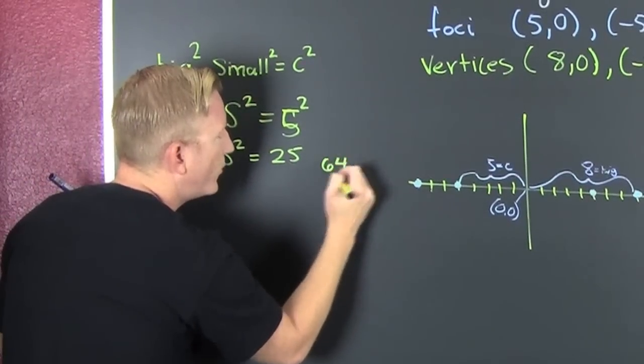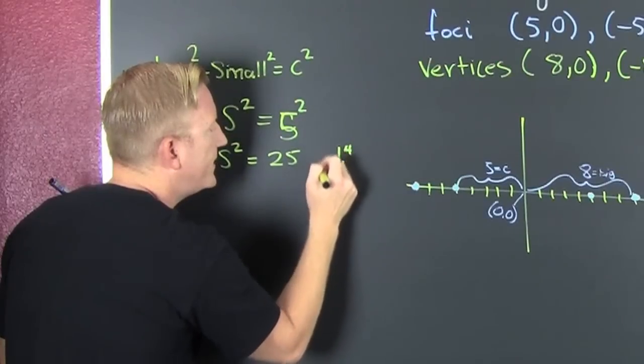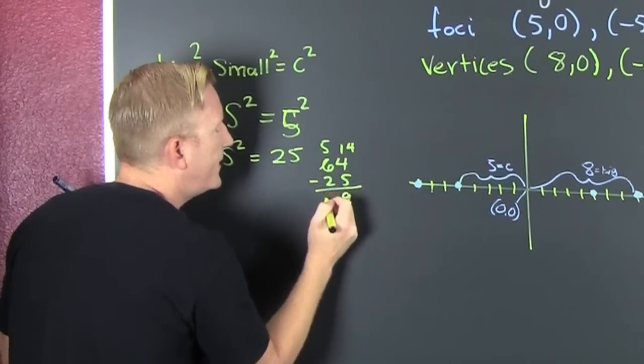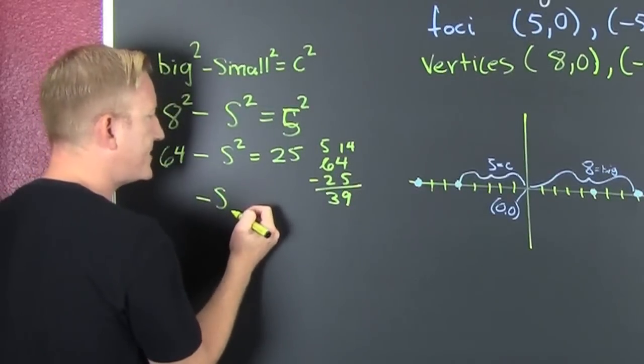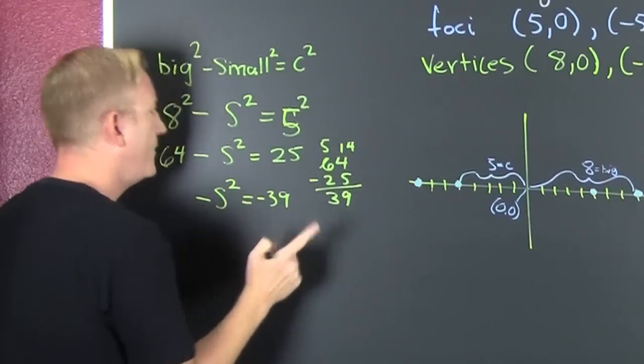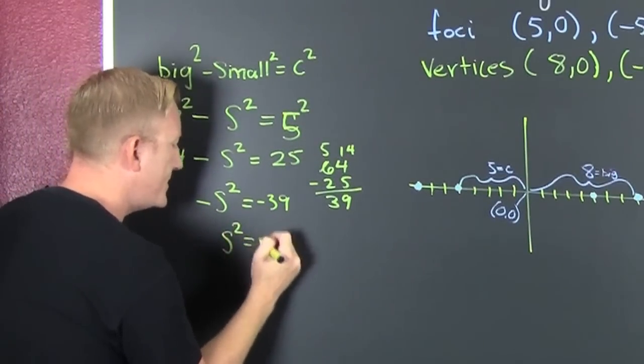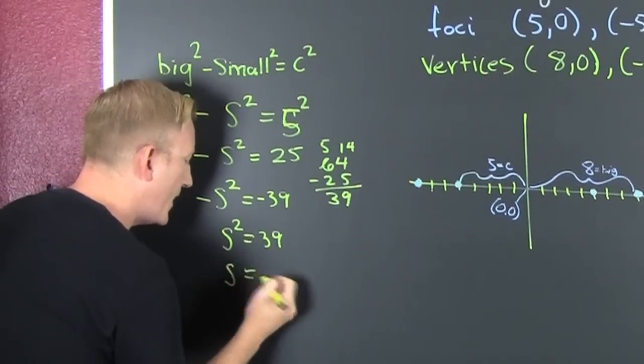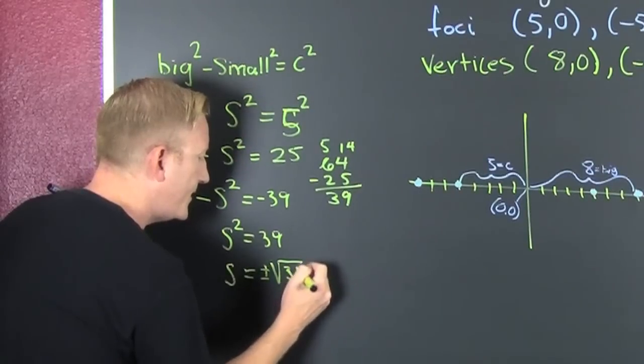So that's 64 minus S squared is 25. And the difference is, let's see, 64 minus 25. You're up 14, you're up 5. That's 5, that's 9. All right. 39. So I have minus S squared is equal to minus 39. I subtract that off and S squared is 39. Then I take the square root of both sides. But I'm not going to forget the plus or minus square root 39.